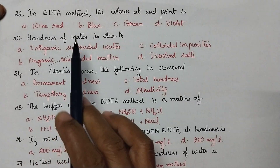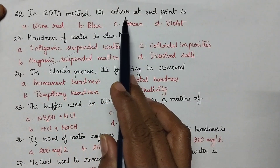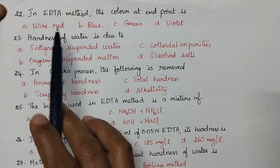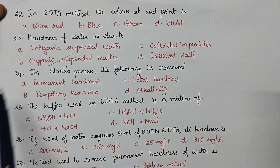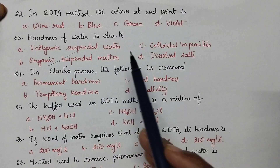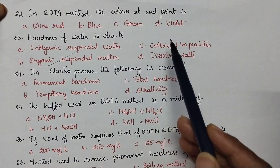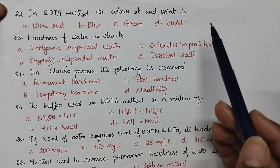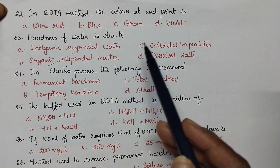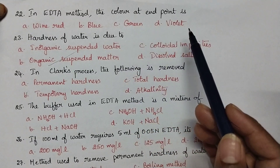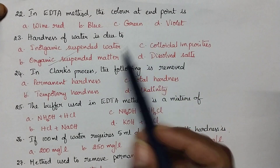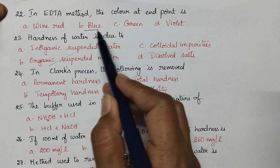In the EDTA method, the color at end point: EDTA method is used for the estimation of total hardness of water. In that process, Eriochrome Black T is used as the indicator. At the end point, blue color appears.